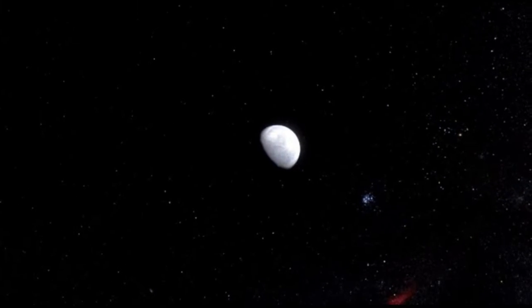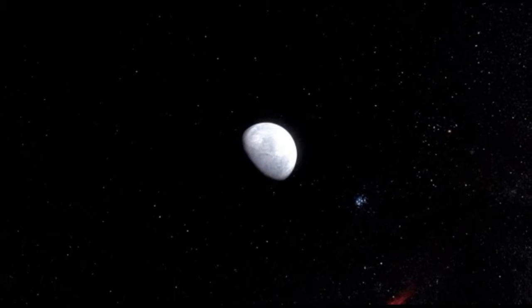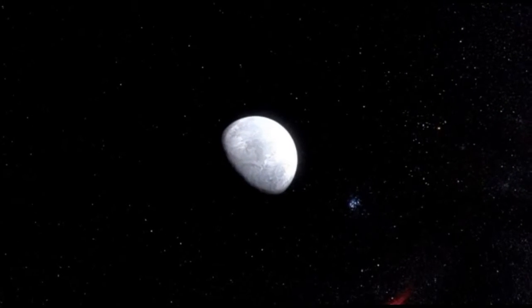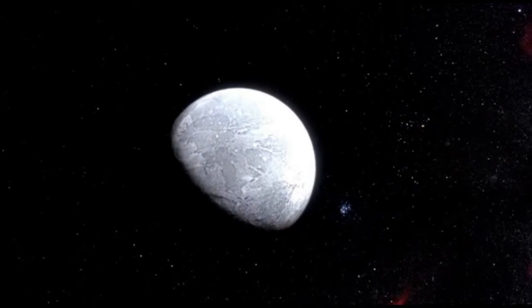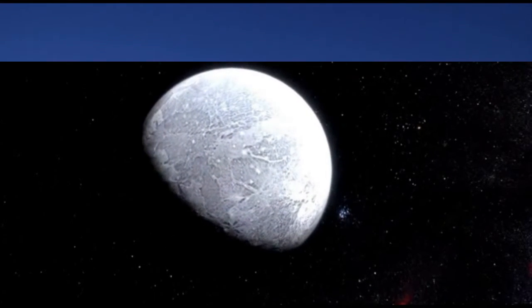The new observations show that Eris is an almost perfect twin of Pluto in size. Eris also seems to be extremely reflective, probably because it is covered in a thin layer of frozen atmosphere.